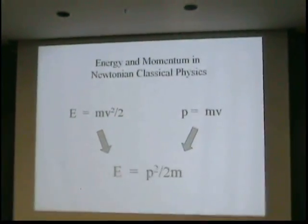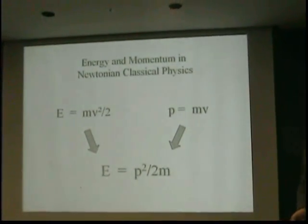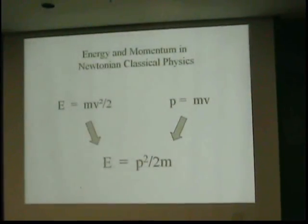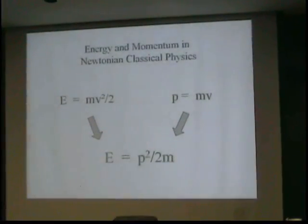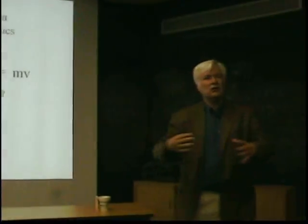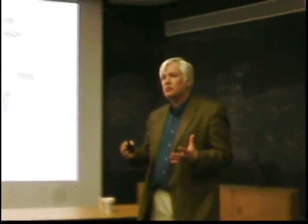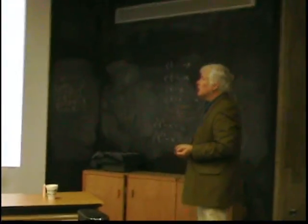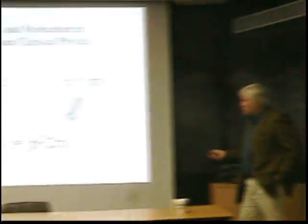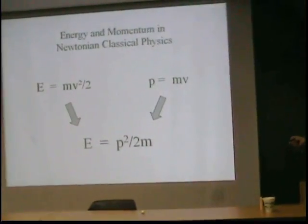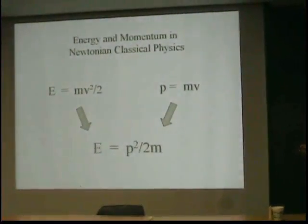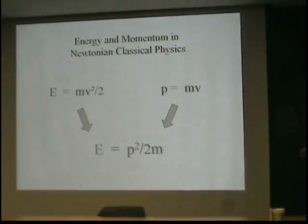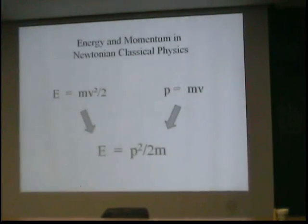If we write down the momentum of a particle in classical physics, it's the mass times the velocity. Remember, momentum has to do with spatial translations in space. Its conservation law comes from space translations, according to Noether. If we work out the energy of a particle in classical physics, it's one-half mv squared. And I can write a relationship that just eliminates v: energy equals momentum squared over 2m.